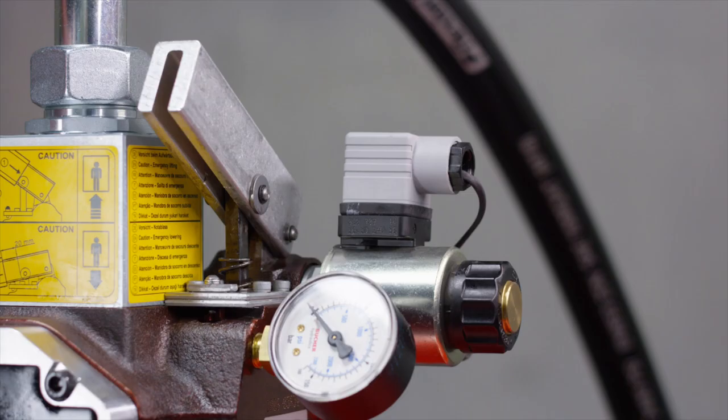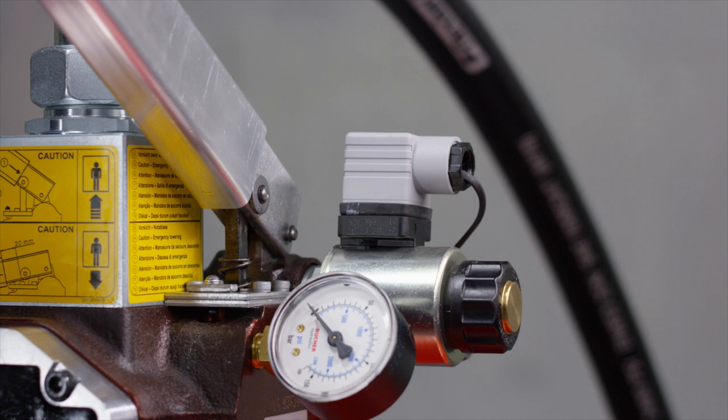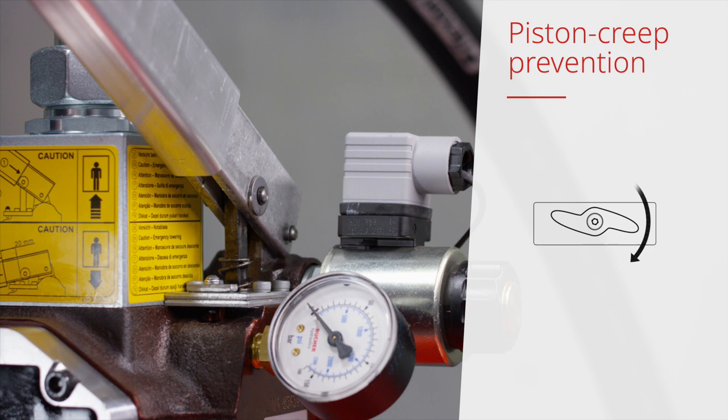Push the extension pipe onto the handle stub of the hand pump as far as it will go, then retract by approximately 3cm. Turn the piston creep preventer clockwise through 90 degrees.